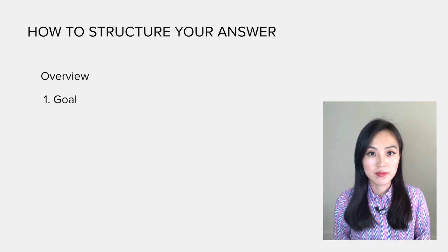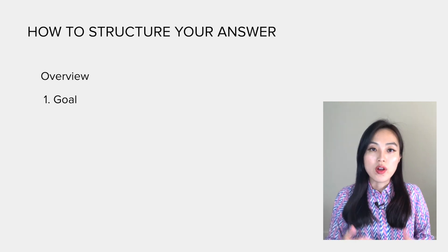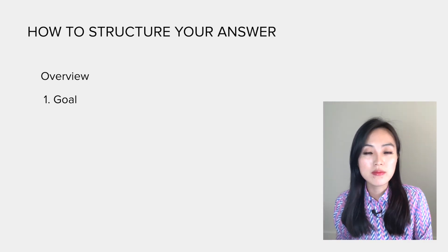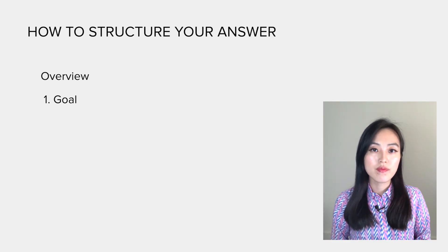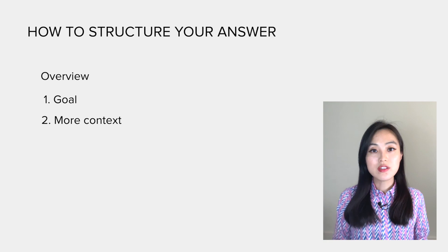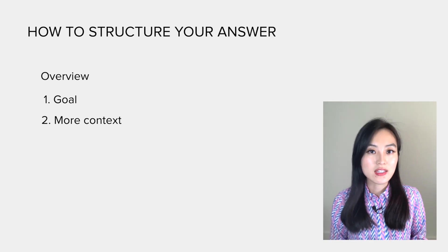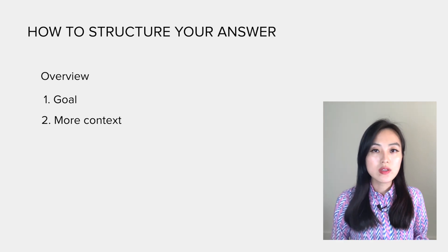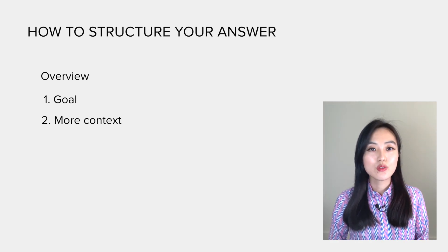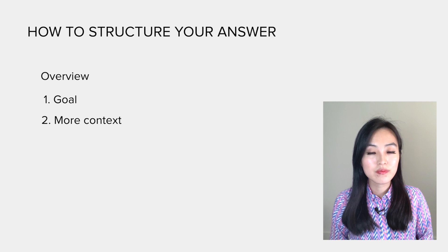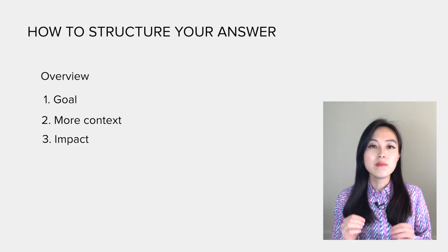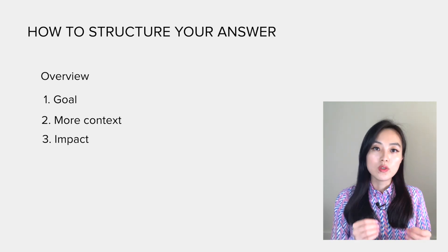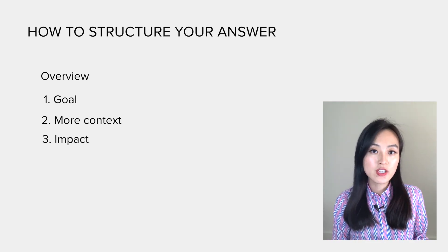The first thing is to use one sentence to summarize the goal of the project — why did you or your company choose to work on it in the first place, and what business problem was it expected to solve? Then use another sentence to provide more context, such as when you did it, with which company, and how long it was. So two sentences in total.